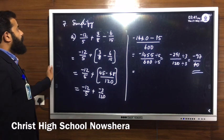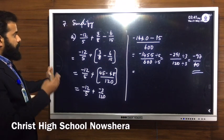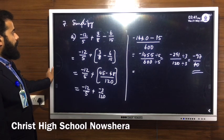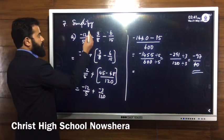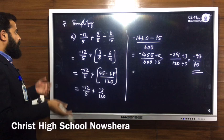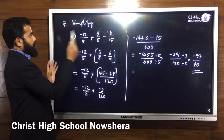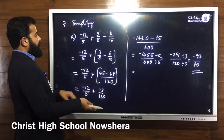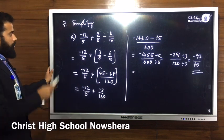Question number 7: simplify. We have the operation: minus 12 divided by 5 plus 3 by 8 minus 6 by 15. We group the terms — since there are three rational numbers, we do two at a time. We cannot do all three calculations together, so we take two rational numbers first, calculate, then do the operation with the third one.